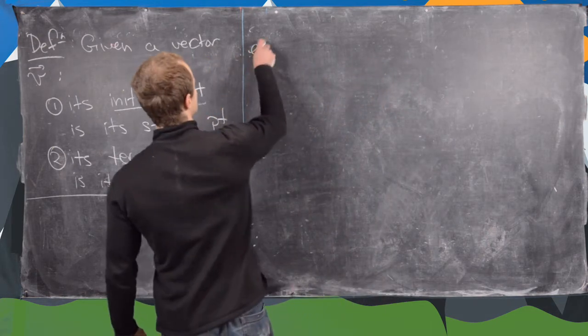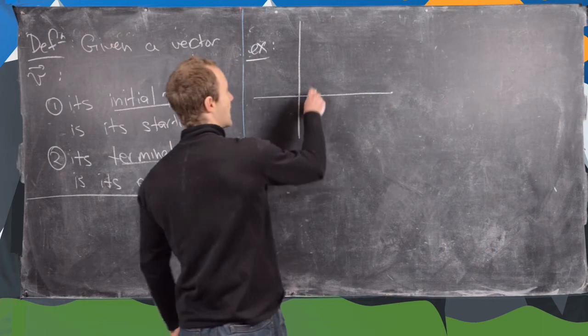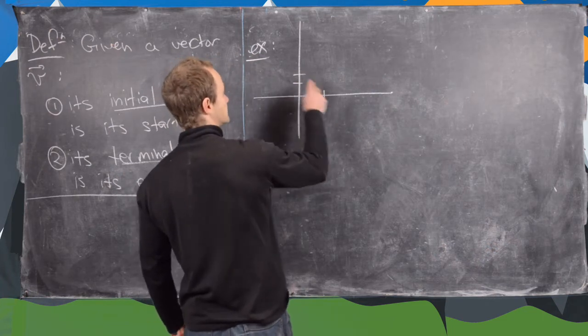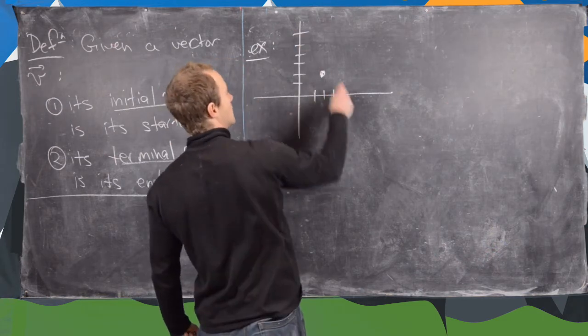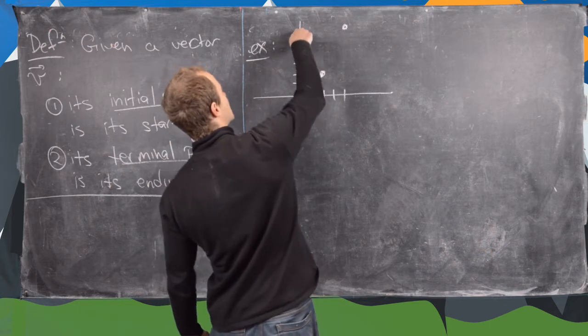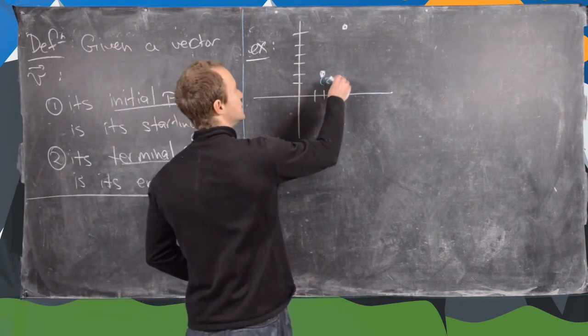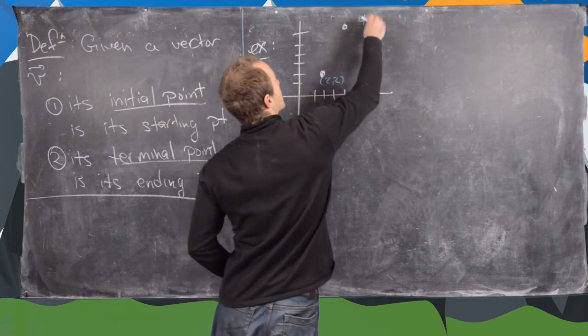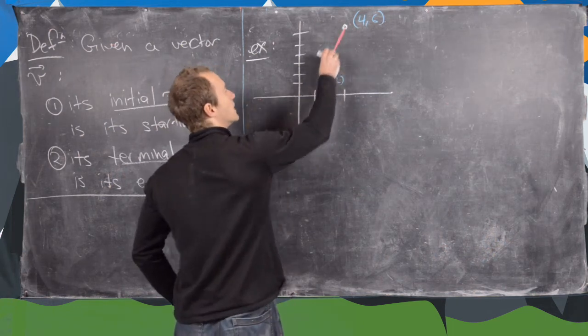Let's look at some examples. So if we look in the plane, maybe here we have the point (2,2), and then here we have the point (4,6). So here we have, like I said, this is (2,2), and this is (4,6), and we look at the vector between these two points.